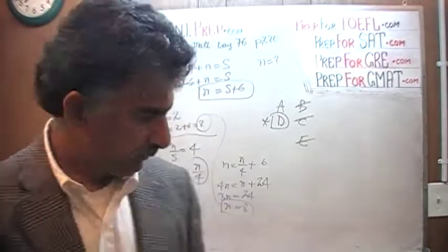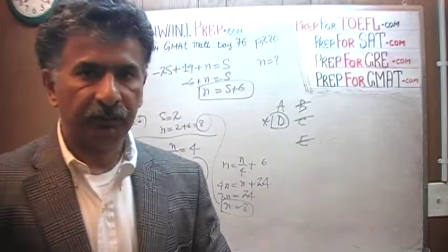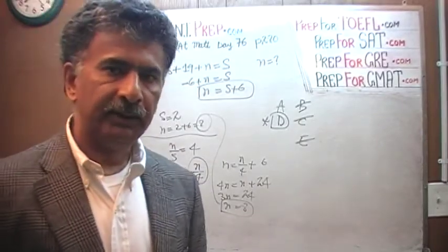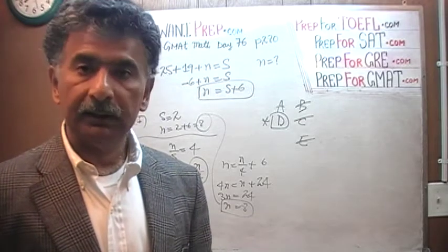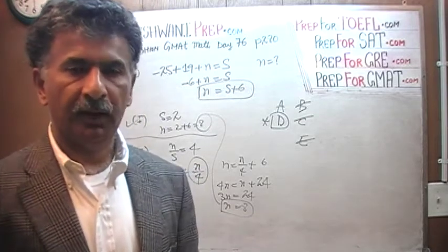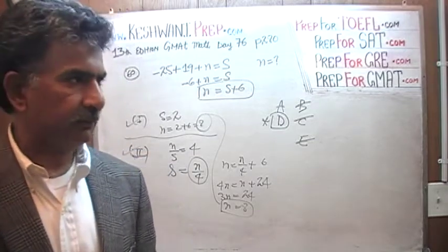These two statements never contradict each other. If n turned out to be 8 based on the information from the first statement, then it better turn out to be 8 based on the information from the second statement. And if it does not, something has gone wrong somewhere, either in the first statement or the work you did with the second statement. But they always act consistent. Do you understand?